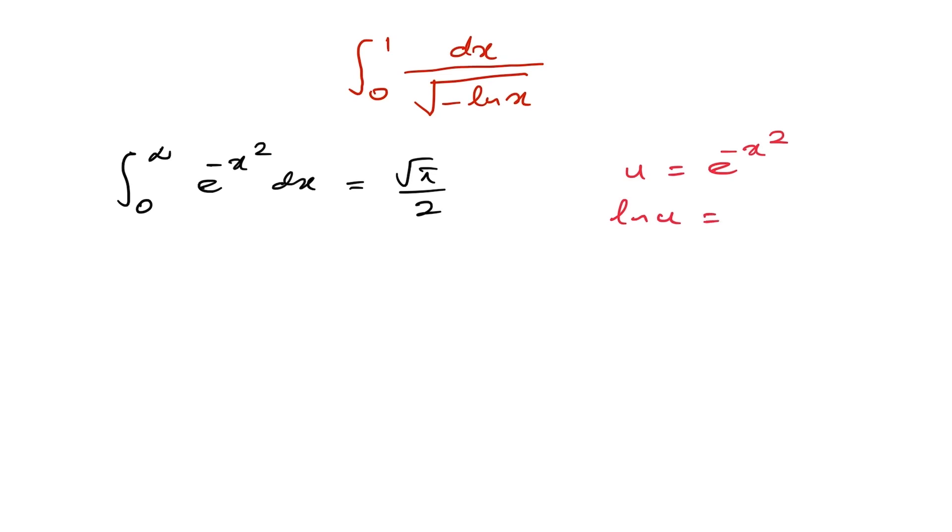So if you isolate x, we have x equals the square root of minus natural log of u. Then if we differentiate, we have dx is equal to minus 1 over 2 times u, square root of minus natural log of u, and here du.